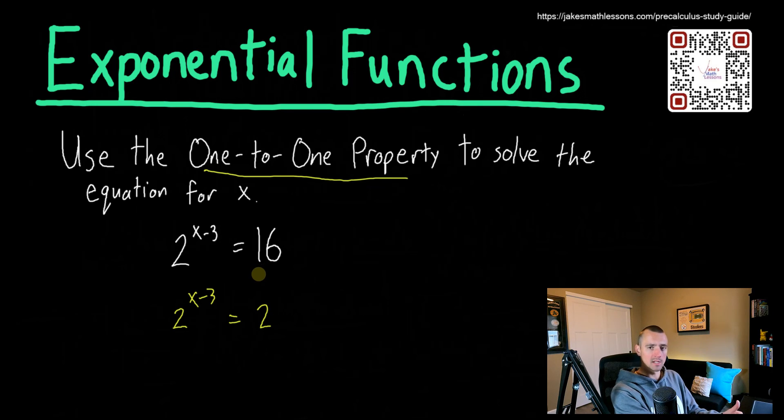Well, 16 is just two to the, well I mean, we can kind of break it down basically. I mean, think about it. Two times two is four. Four times two is eight. Eight times two is 16. So if we do two times itself four times, that gets us 16. Two times two is four, four times two is eight, eight times two is 16. So we got two to the fourth power, because there's four twos here, is 16. We write 16 as two to the fourth power.